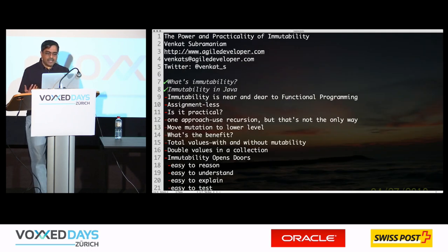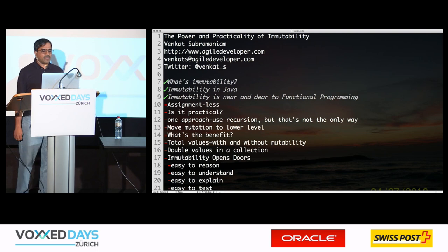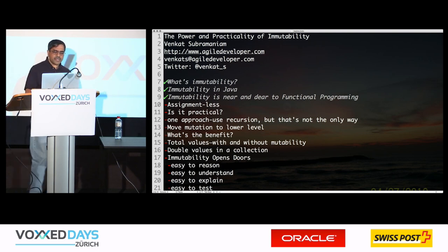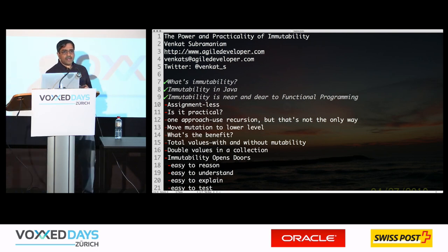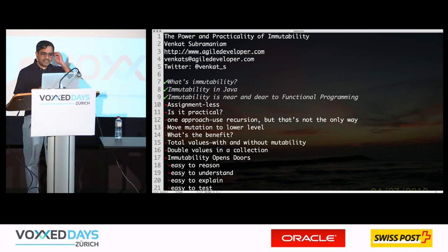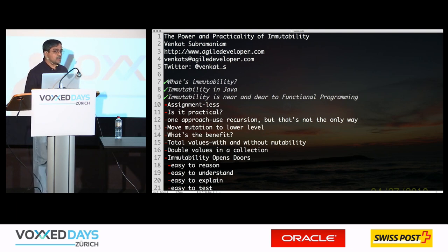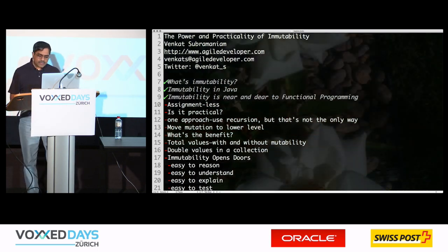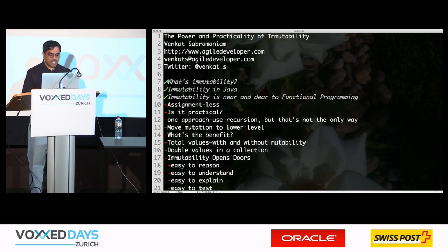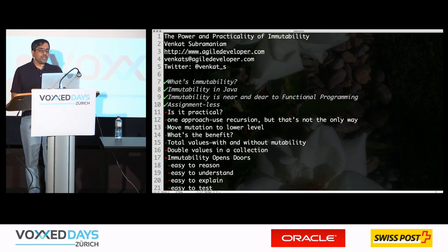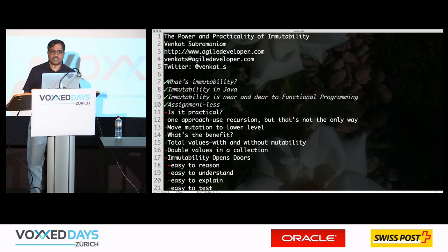I want to draw an analogy to something else. One of the key things about functional programming is it emphasizes two different things: we should program with immutability — they talk about pure functions — and it's near and dear to functional programming that we should honor immutability. We also use higher order functions as well. Functional programming really says we should favor assignmentless programming.